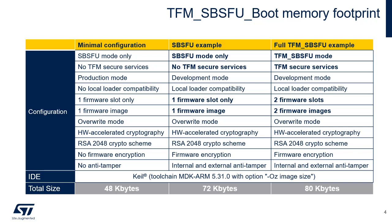SBSFU code — code managing the secure boot and the secure firmware update functions. HDP activation code — code that hides all SBSFU code and secrets before launching the application. For more details about the footprint of each section, refer to the UM2851 user's manual entitled Getting Started with STM32CubeU5 TFM Application.